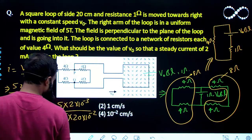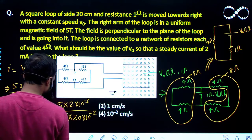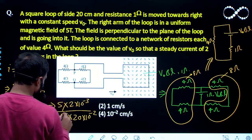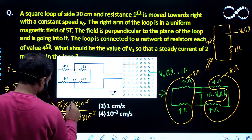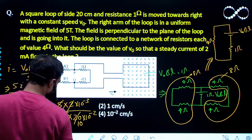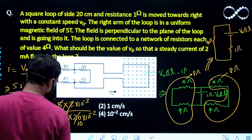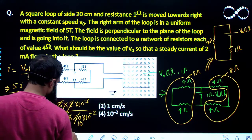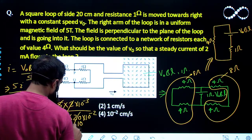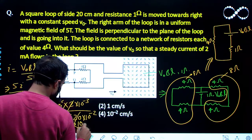If you will see here, this 5 will get cancelled out. And this will become 10 here and so this will become minus 3, 10 raised to the power 2 into 10 raised to the power minus 1.